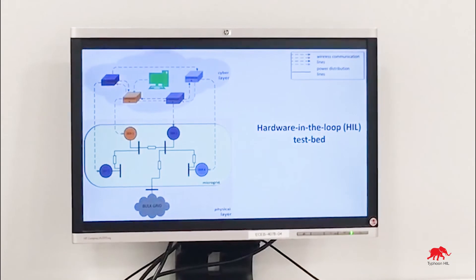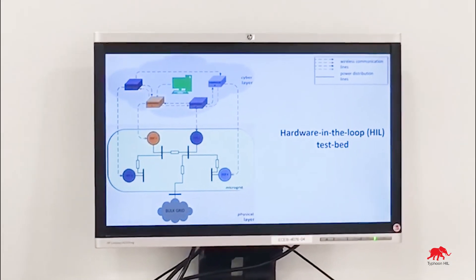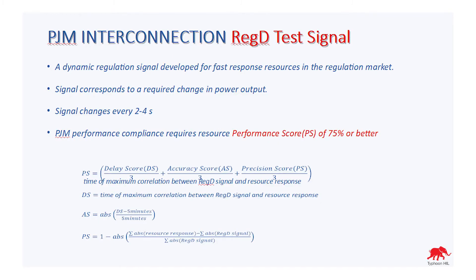The regulation signal we use in this testbed is called the PGM Reg D test signal. It is a dynamic regulation signal developed for fast response resources in the regulation market. The signal corresponds to a required change in power output. The signal changes every 2 to 4 seconds.